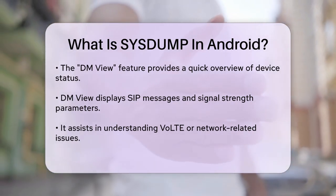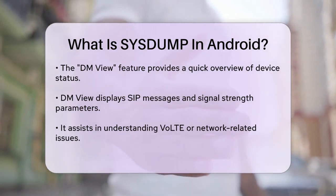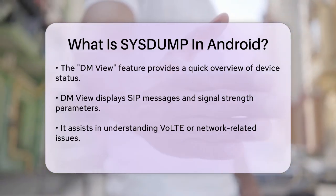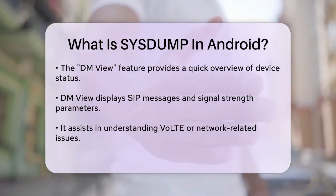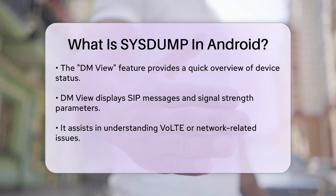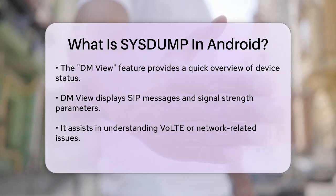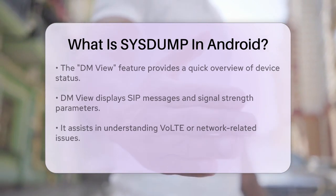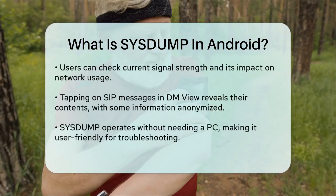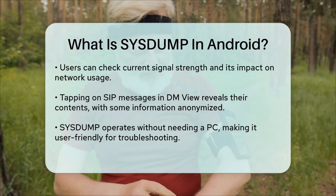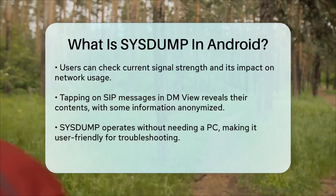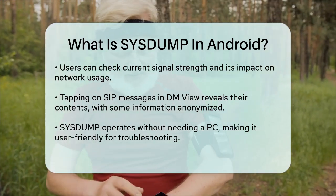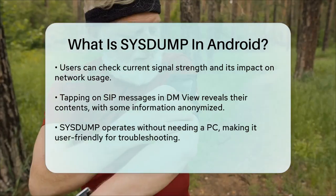For example, if you're having trouble with your LTE signal, the DM View can show you the current signal strength and how it affects your network usage, such as when your device falls back from VoLTE to UMTS or circuit-switched networks. Additionally, tapping on the SIP messages in the DM View expands them, allowing you to see the contents of these messages, although some private or identifiable information might be replaced with X for privacy reasons.